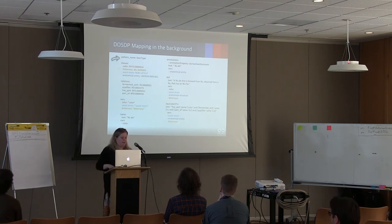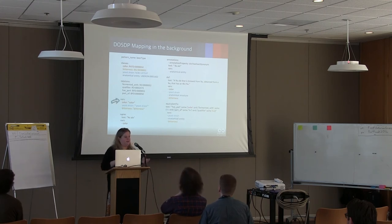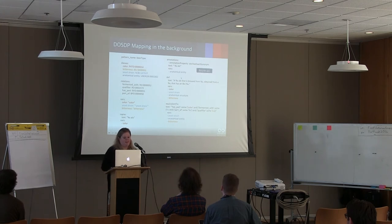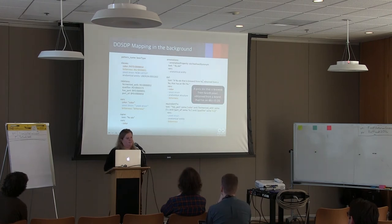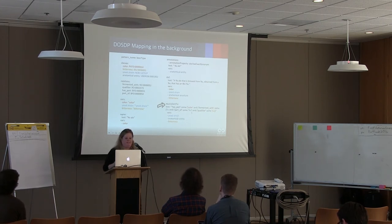Let's go through a pattern. We have a pattern name — every pattern gets a name, this will be a beer type pattern. We specify the classes used to build the logical definitions: color, bitterness, yeast strains, ontology, and how many of these different ontologies are involved. We define the relationships between these terms, and then we have different variables we can use to build the patterns. The patterns can actually build the labels, synonyms, and text definitions as well as the logical definitions. For example, with the variable 'color', it can automatically create the label — e.g., pale ale — give it a synonym, structure the text definitions using different variables, and develop the equivalent axioms based on these patterns.